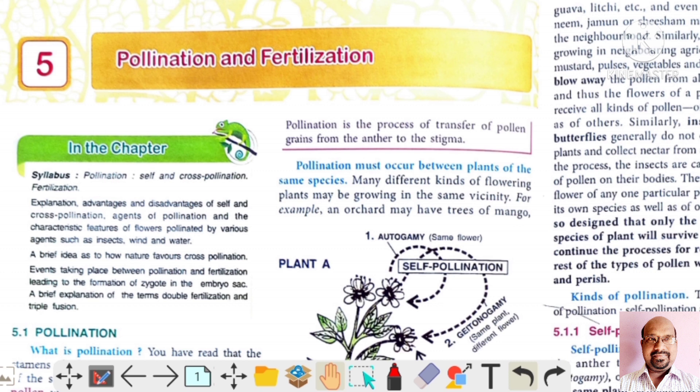The first step is that the pollen grain must reach the stigma. This transfer of pollen grains from anther to the stigma is called pollination. Pollination is the process of transfer of pollen grains from anther to stigma.